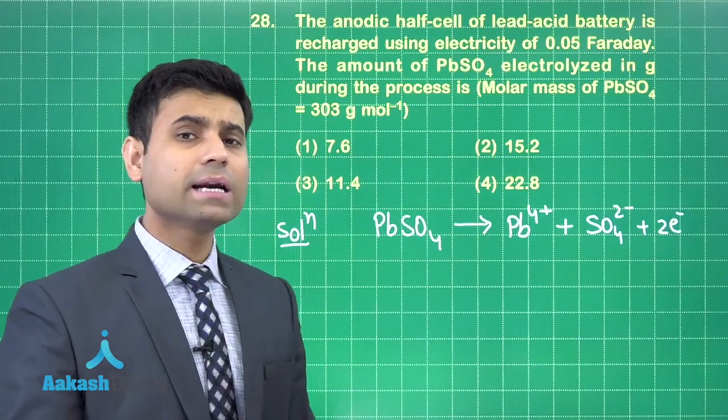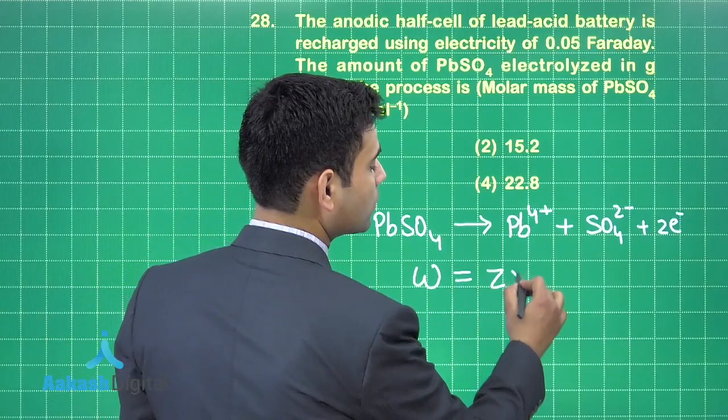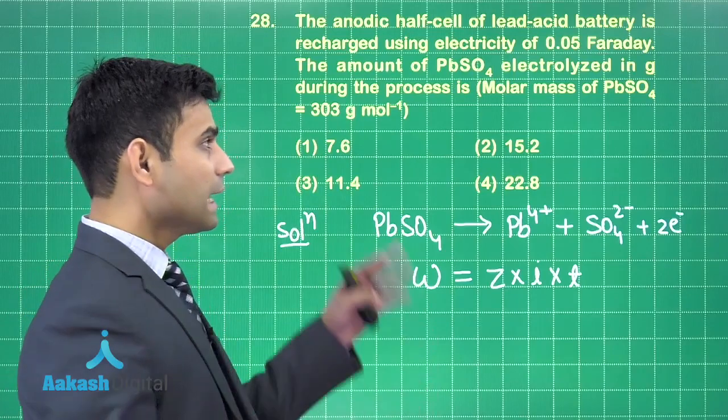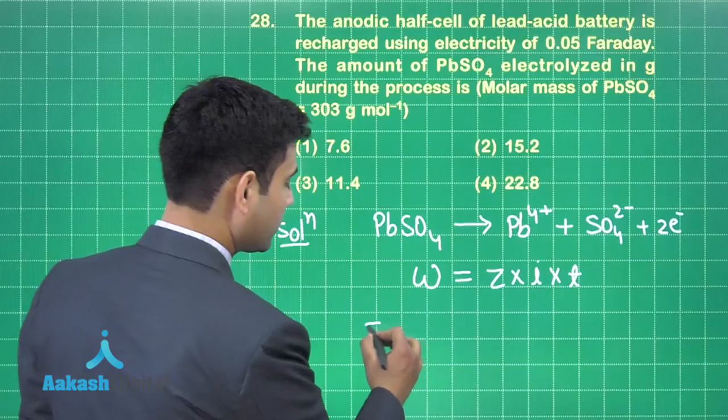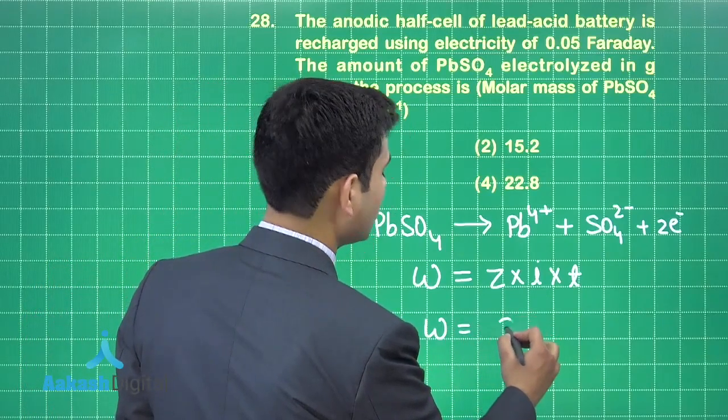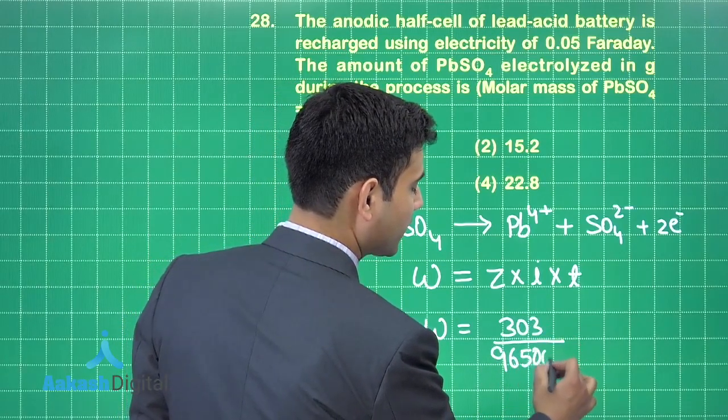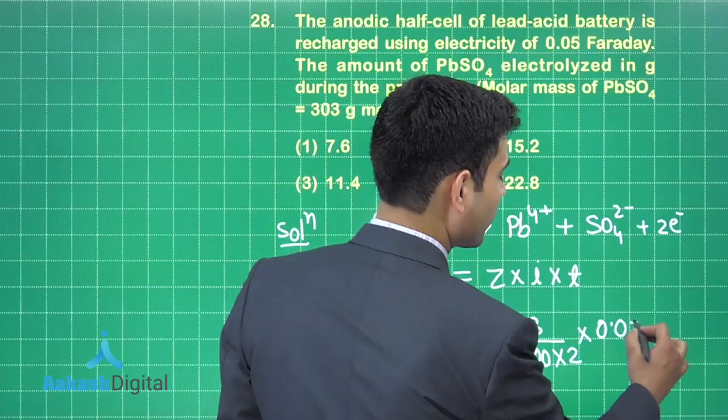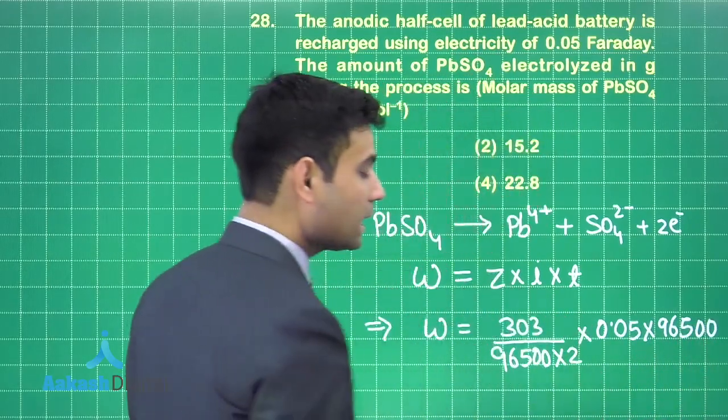From the Faraday's first law, we know that w = z × i × t. Now, the electricity or charge given is 0.05 faraday. So, we can write w = z which is molar mass by 96500 into n factor which is 2 multiply by 0.05 into 96500. This will be the charge in coulomb.